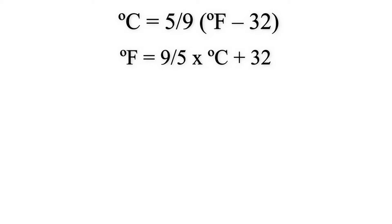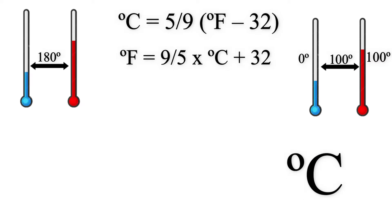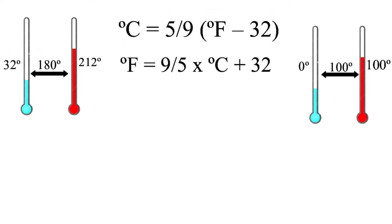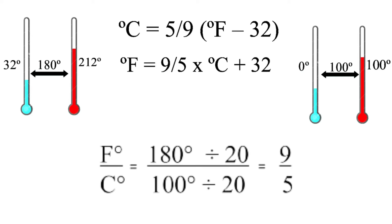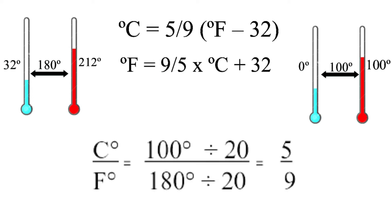There is also a reason for the fractions 5 over 9 and 9 over 5. There are 100 degrees between the freezing point (0°C) and boiling point (100°C) of water on the Celsius scale, and 180 degrees between the similar points — 32°F and 212°F — on the Fahrenheit scale. Writing these as a ratio of Fahrenheit degrees to Celsius degrees gives 180 over 100, which reduces to 9 over 5. Flipping the ratio to Celsius over Fahrenheit gives 100 over 180, which is 5 over 9.